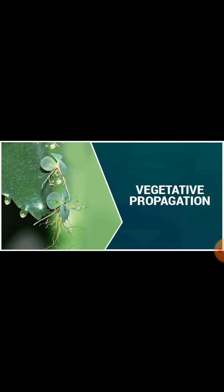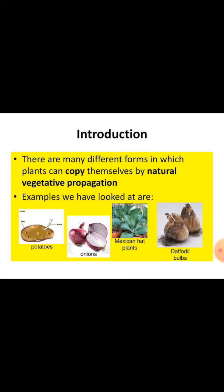Vegetative reproduction has two types: one is called the natural method and another is the artificial method. Vegetative reproduction is a special type of asexual reproduction. There are many different forms of plants that can copy themselves by natural vegetative modification methods, for example potato and onion.